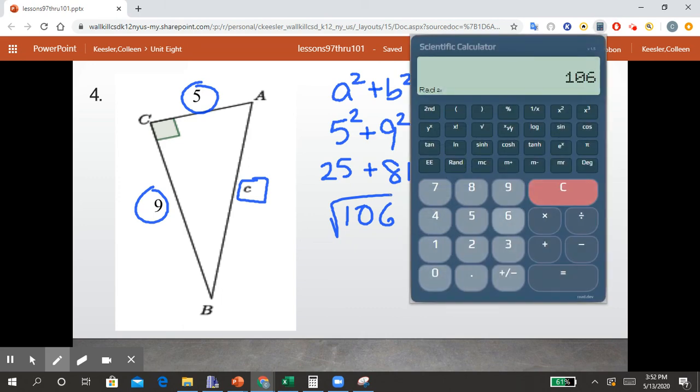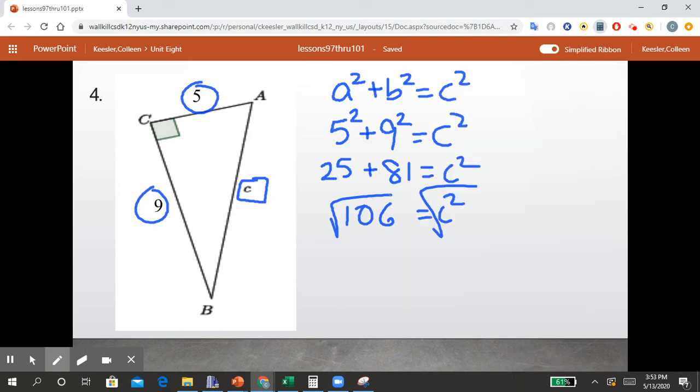Clear. We get 106 square root is 10.29. Now remember we're rounding to the tenths. So the two is currently in the tenths place and the nine follows. So we're going to round that to 10.3. So we have that C is approximately 10.3 units. All right.